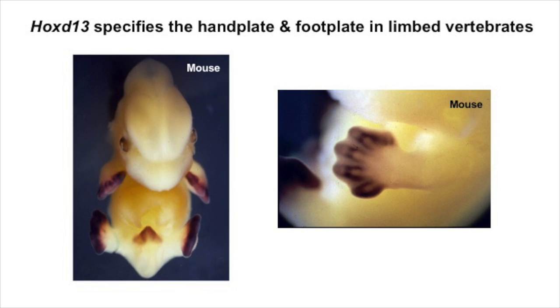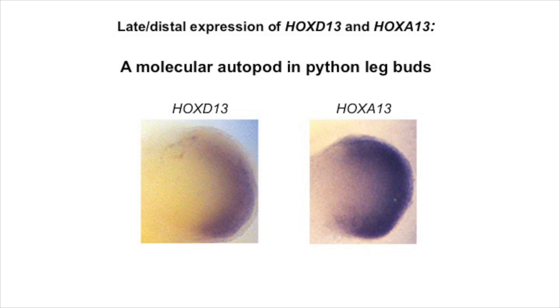We were also struck by the expression pattern of HOXD13, which is initially involved in building the upper part of the limb, but has a later role in laying down the foot and the hand. To our surprise, we found that this distal domain of HOXD13 expression that's required for building hands and feet also occurred in the leg buds of the python. There was effectively a molecular autopod being laid down, specifying a region of cells that should have the identity of the foot, which was totally unexpected because pythons don't have feet.